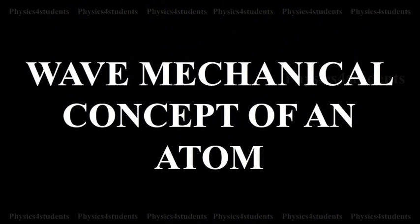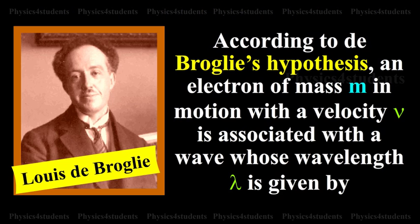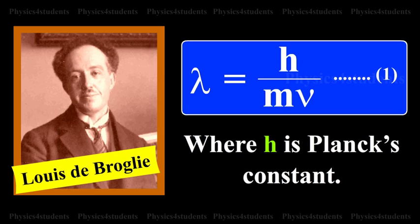Wave Mechanical Concept of Atom. According to de Broglie's hypothesis, an electron of mass m in motion with a velocity v is associated with a wave whose wavelength λ is given by λ = h/mv. This is equation 1, where h is Planck's constant.